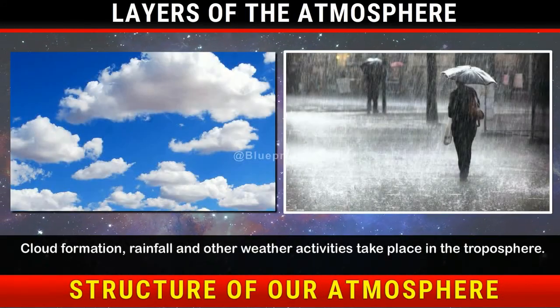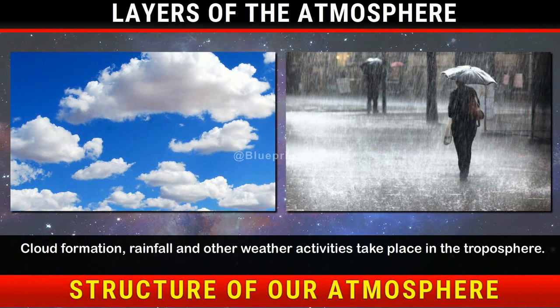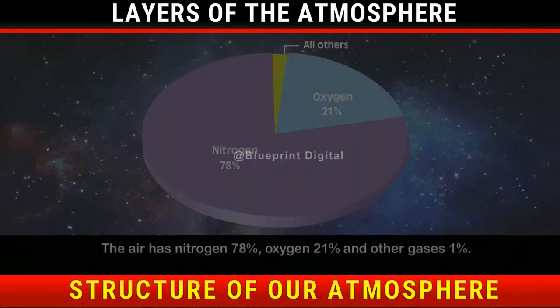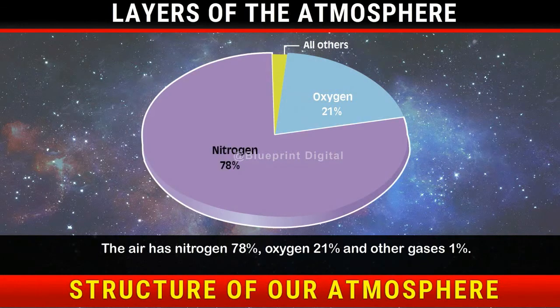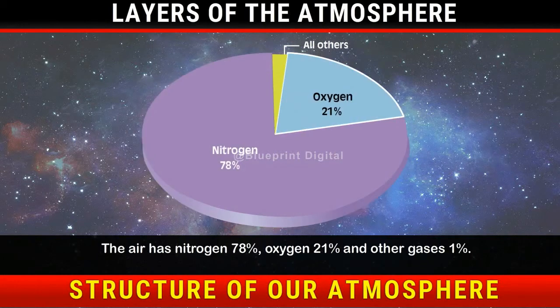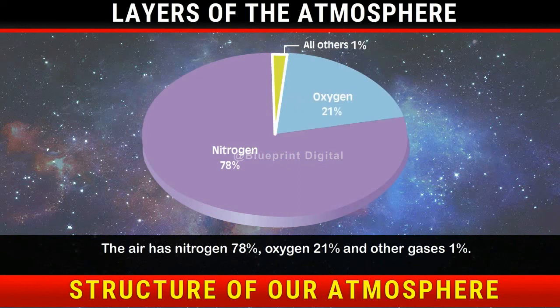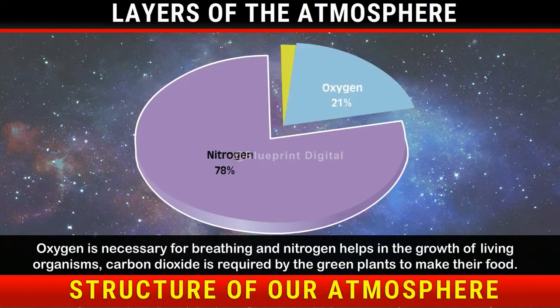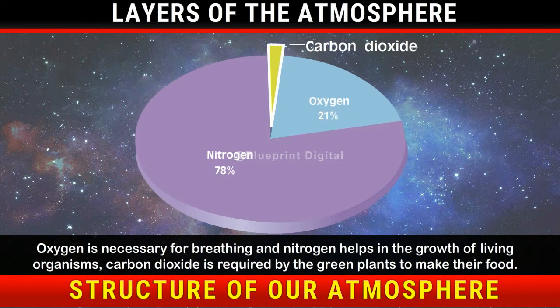Cloud formation, rainfall and other weather activities take place in the troposphere. The air has nitrogen 78%, oxygen 21%, and other gases 1%. Oxygen is necessary for breathing and nitrogen helps in the growth of living organisms. Carbon dioxide is required by the green plants to make their food.